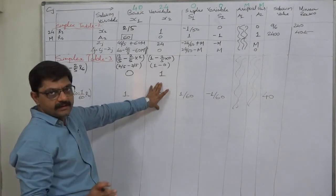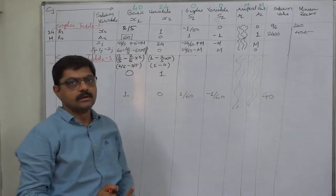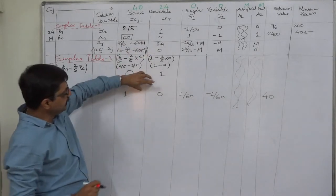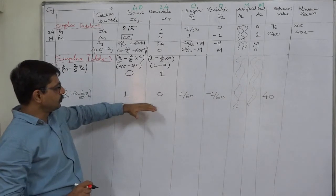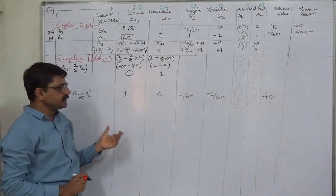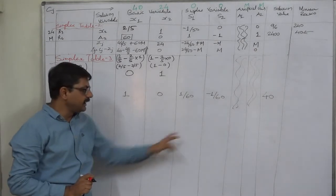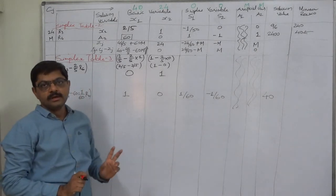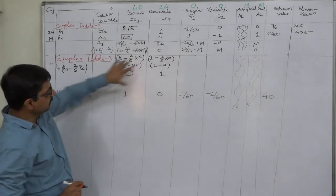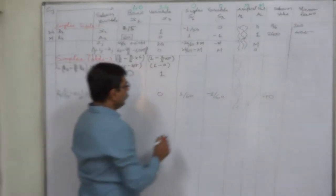However, friends, never assume you have the optimal solution just because you've obtained a unit matrix in the basic variable columns. Optimality must be checked through the delta J row only. In this case of minimization, only when all delta J values are 0 or positive is it the optimal solution. We will not decide optimality solely on the basis of getting a unit matrix in the basic variables.